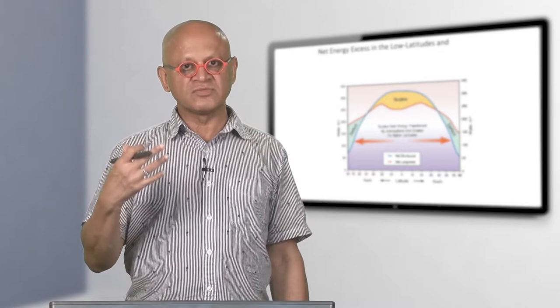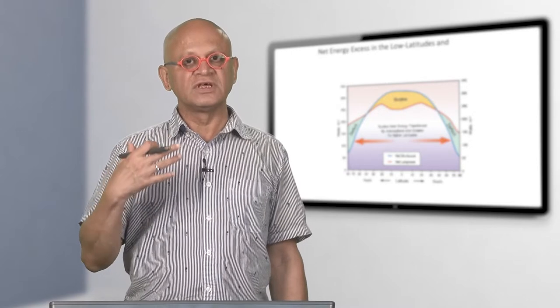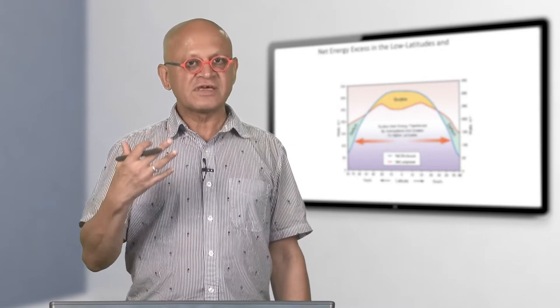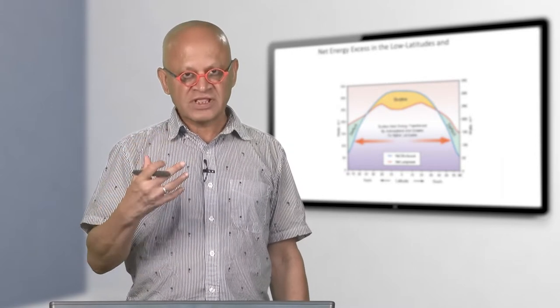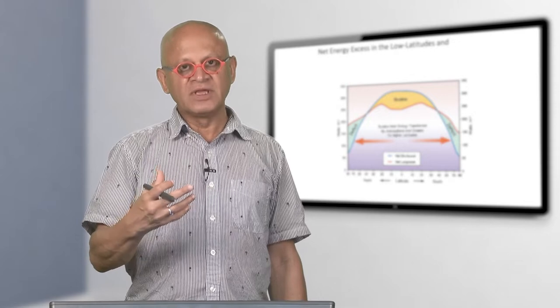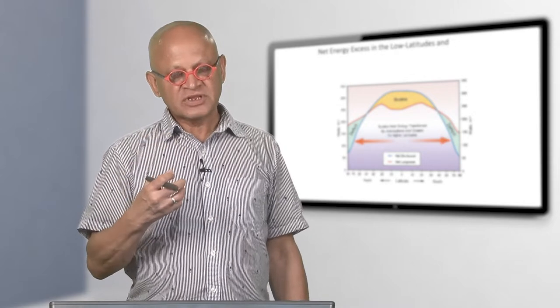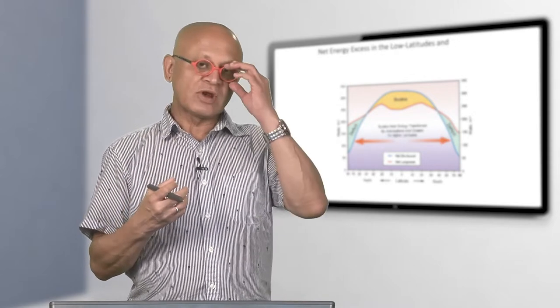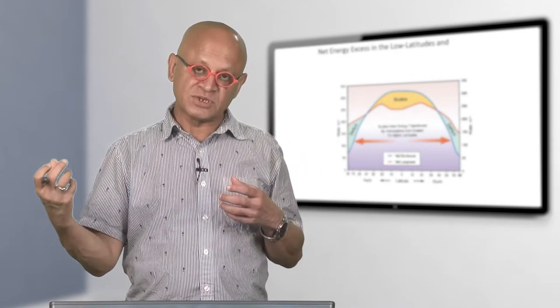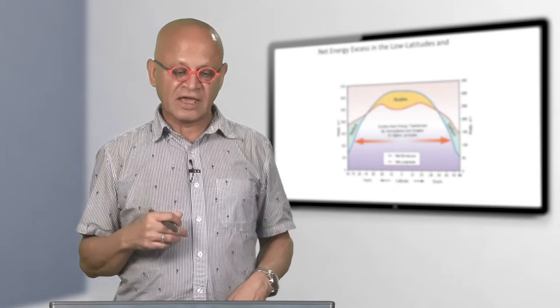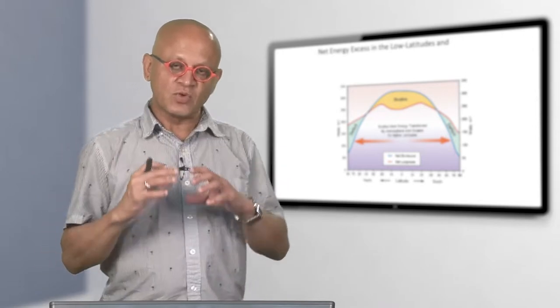We do this through winds, circulation, and ocean currents. Hurricanes, tornadoes, and monsoons are all part of transporting energy from surplus regions in the lower latitudes to deficit regions in the higher latitudes.